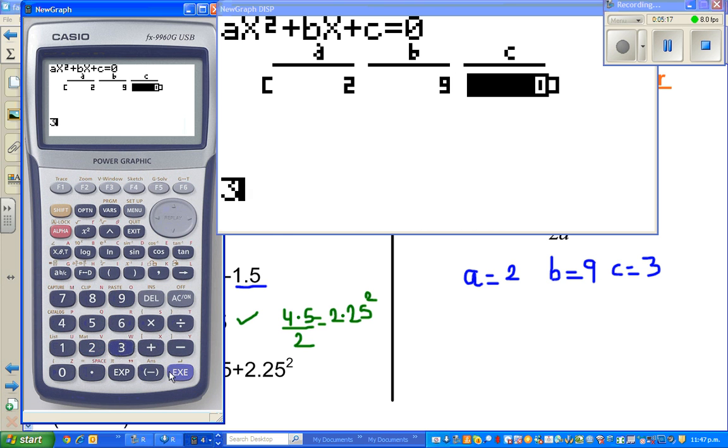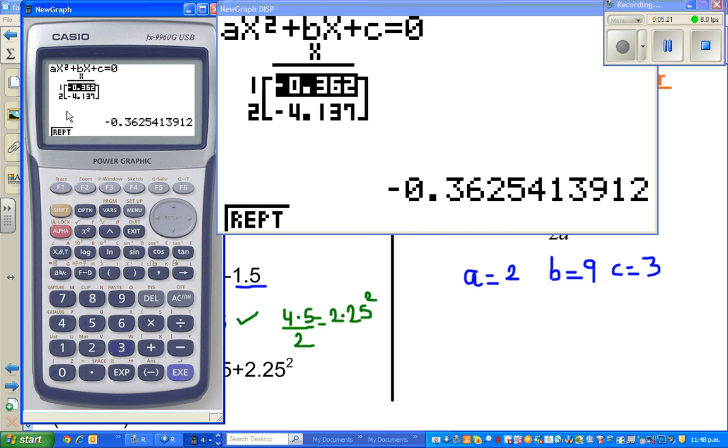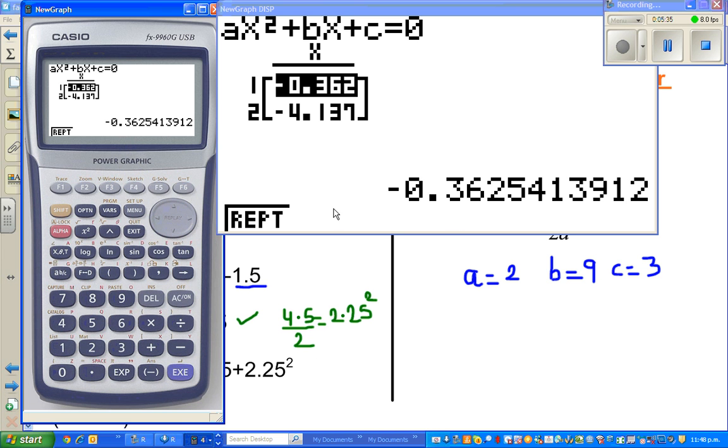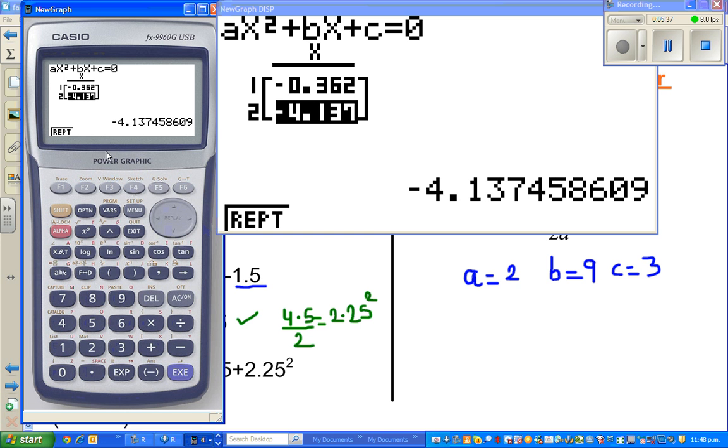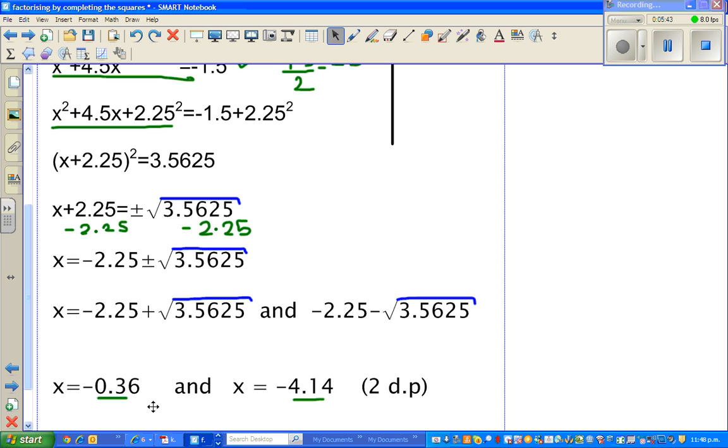So my a is 2, my b is 9, and my c is 3. You go solve, and you get one answer: -0.36. The next is -4.14. So the two answers are -0.36 and -4.14 to 2 decimal places.